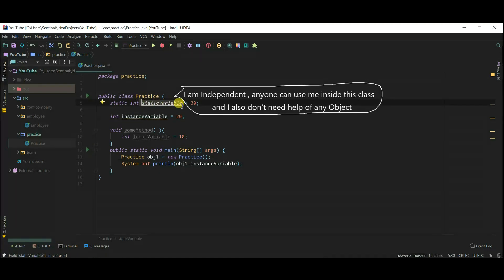Now, it's time for static variable. Static variable is like independent. Anyone can access them inside class and we can directly call static variable by using class name. So, we don't need an object to access static variable.